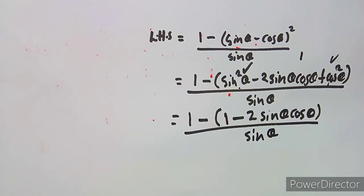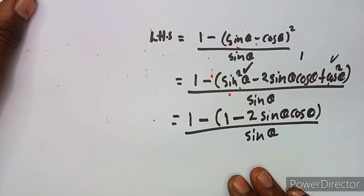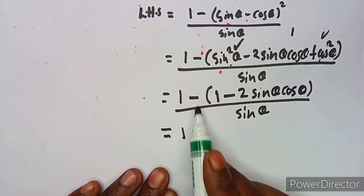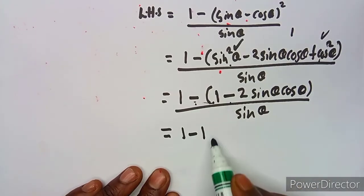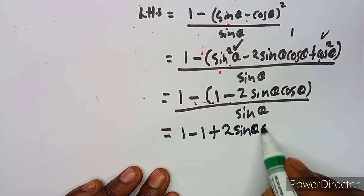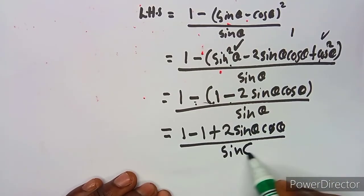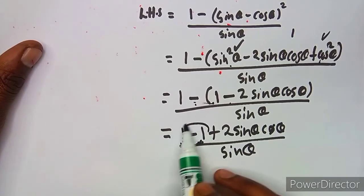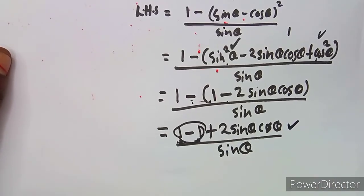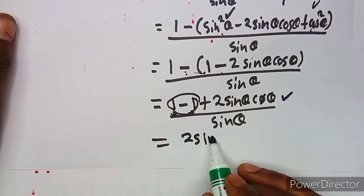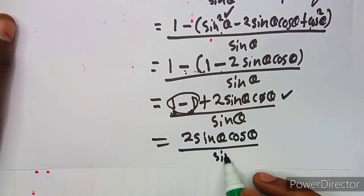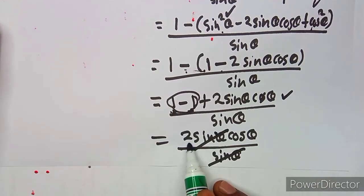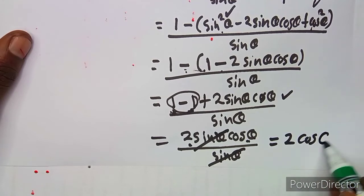Now expanding the numerator: minus one times 1 gives minus 1, and minus one times minus two sine theta cos theta gives plus two sine theta cos theta. So we get 1 minus 1 plus two sine theta cos theta over sine theta. The 1 minus 1 cancels to zero, leaving two sine theta cos theta over sine theta. The sine cancels, leaving 2 cos theta.